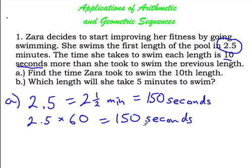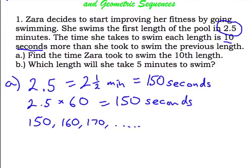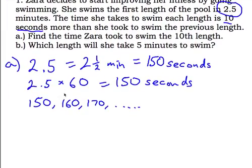So the first length of the pool is 150 seconds. Each time she swims a length, her time increases by 10 seconds. So her next length is going to be 160 seconds, then 170 seconds, and so on. You can see this is just an arithmetic sequence where the common difference is 10 — it's increasing by 10 each time. So we have an arithmetic sequence increasing by 10 each time.